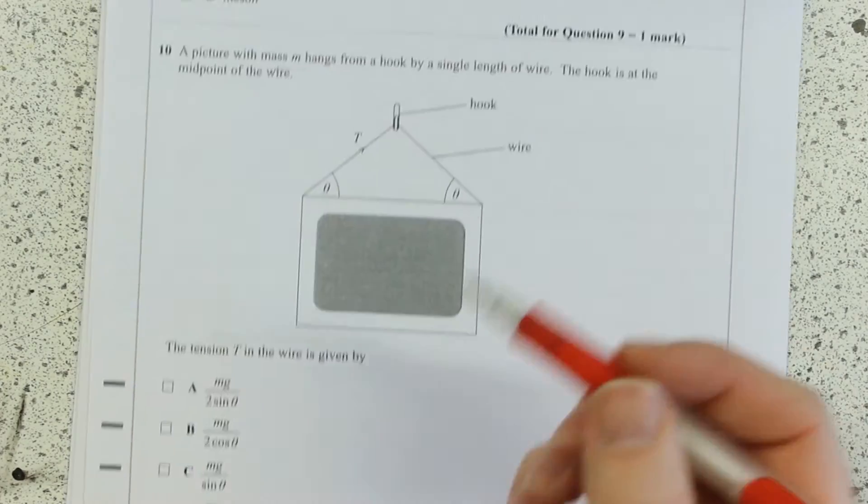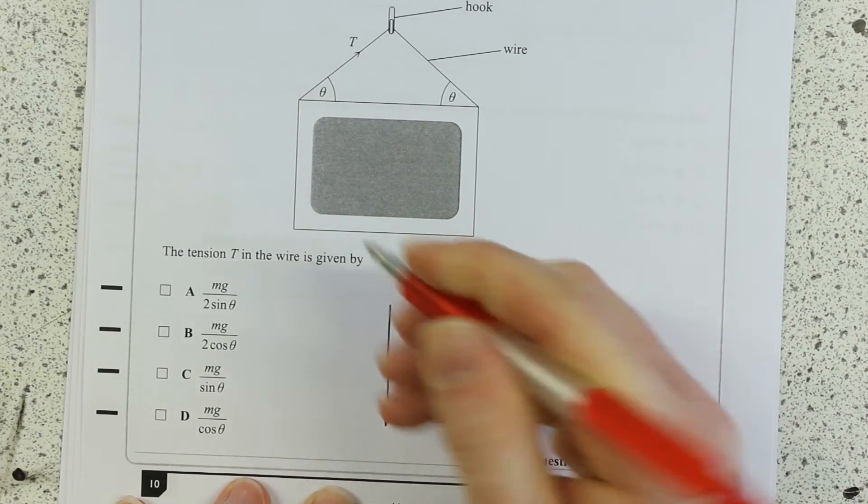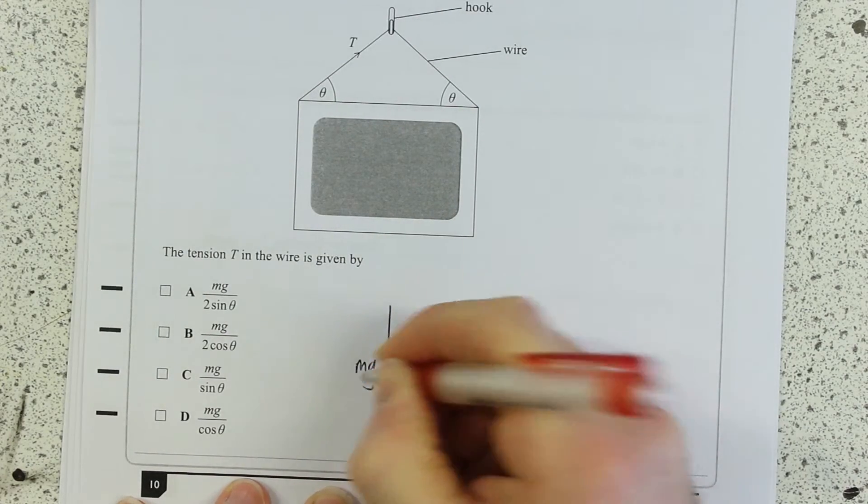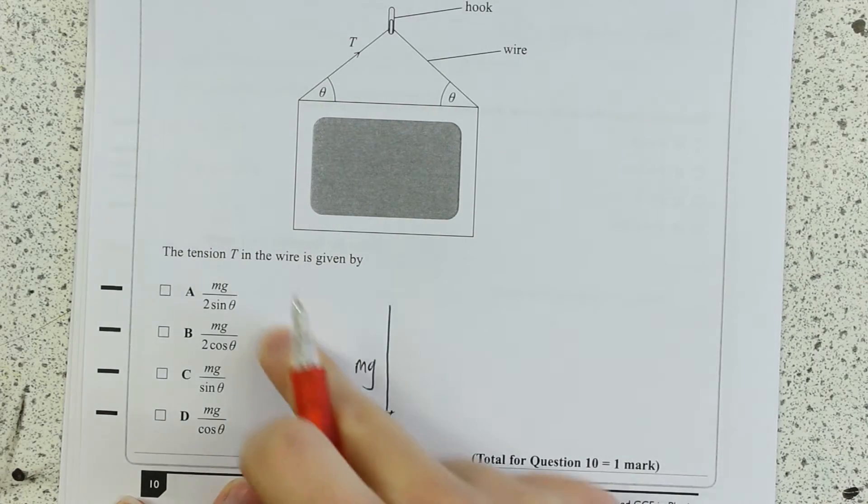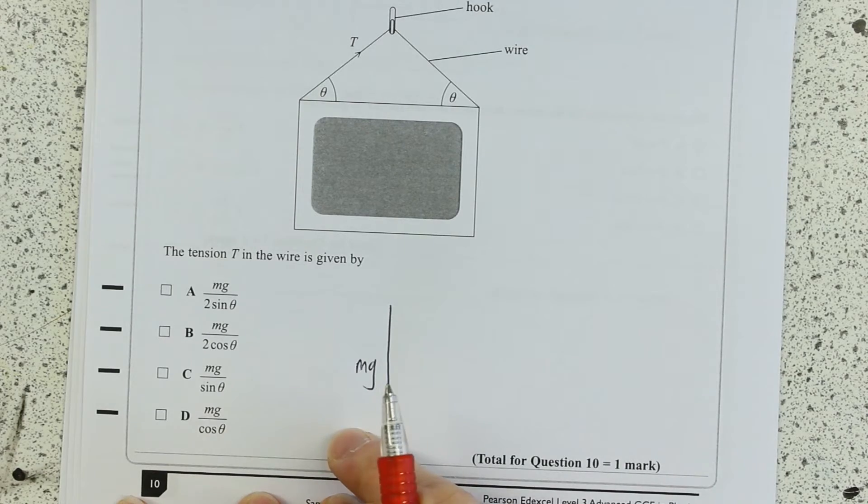So we're told it's a mass M. Okay, so we know that the force vertically downwards is its weight, Mg. You could use W for the notation, but you can see I'm trying to work out a tension, so I'm going to use Mg.